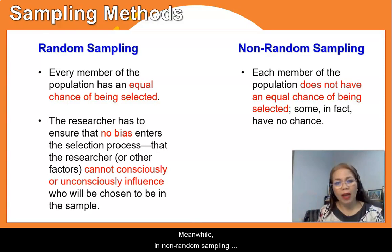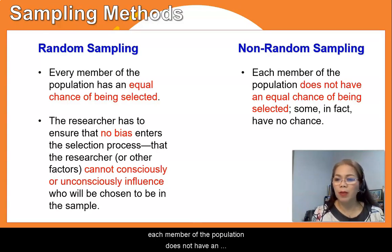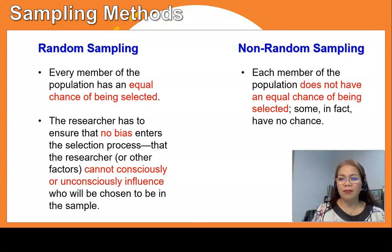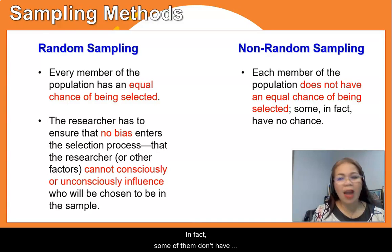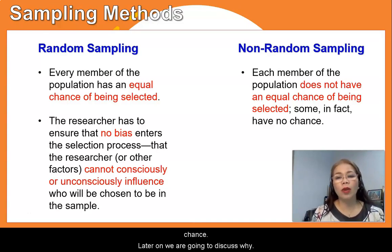Meanwhile, in non-random sampling, each member of the population does not have an equal chance of being selected. In fact, some of them don't have a chance at all. We are going to discuss why later on.